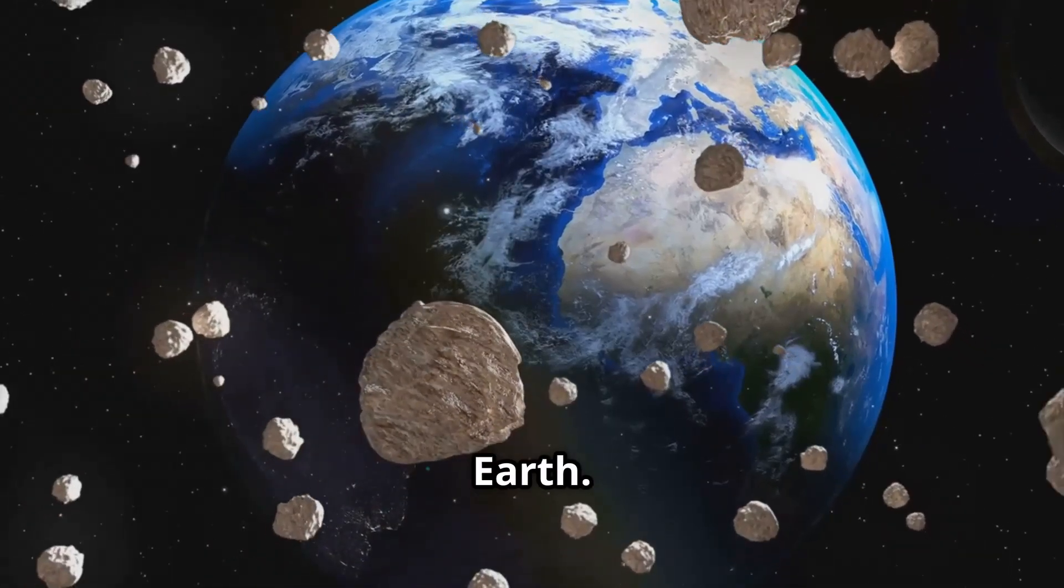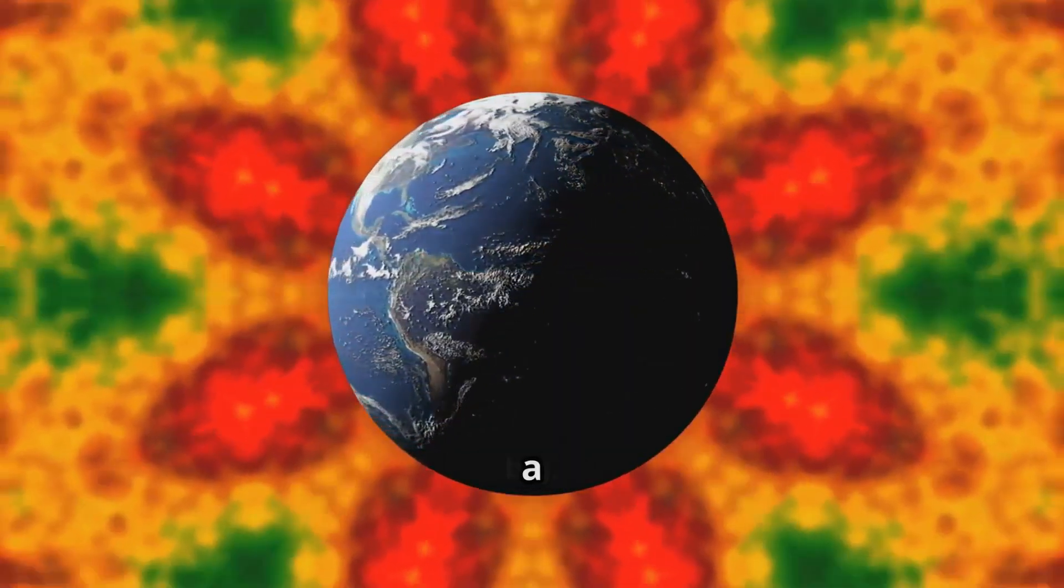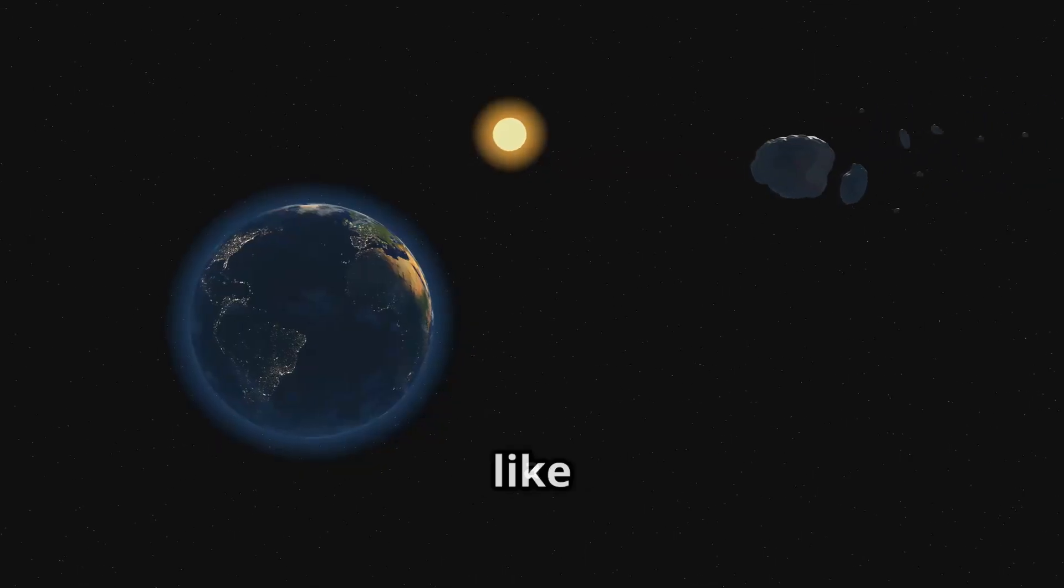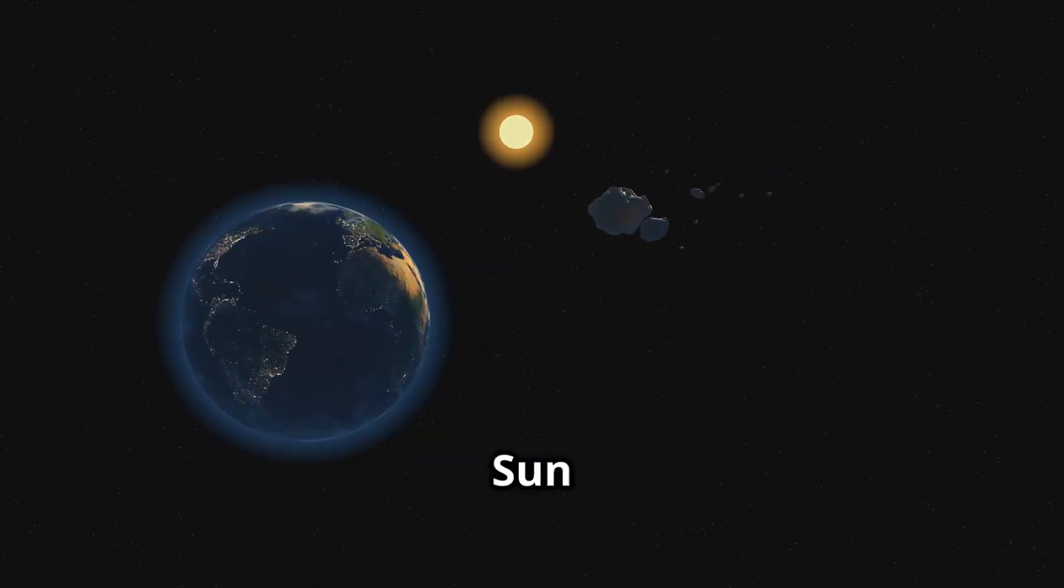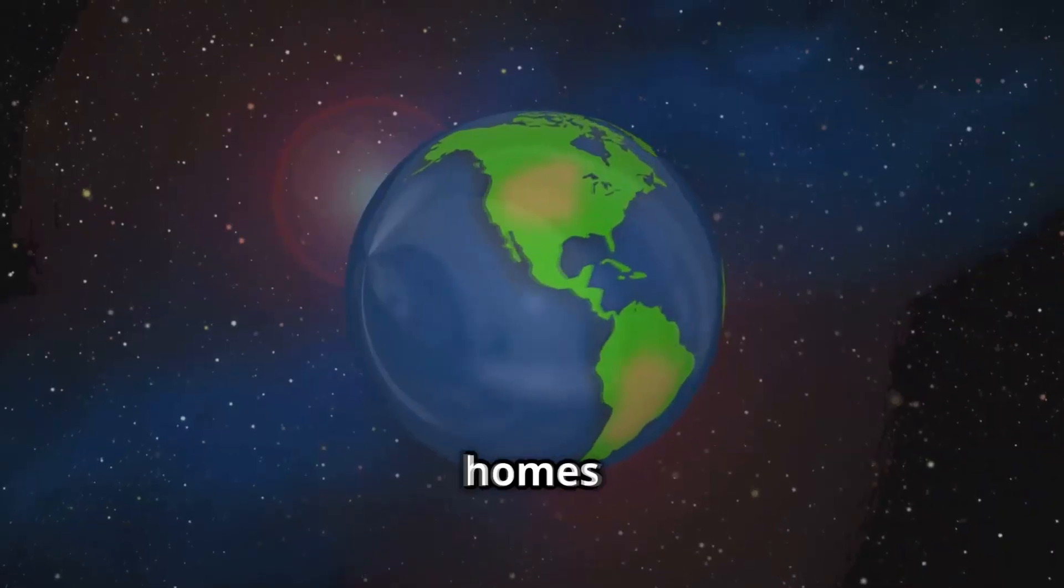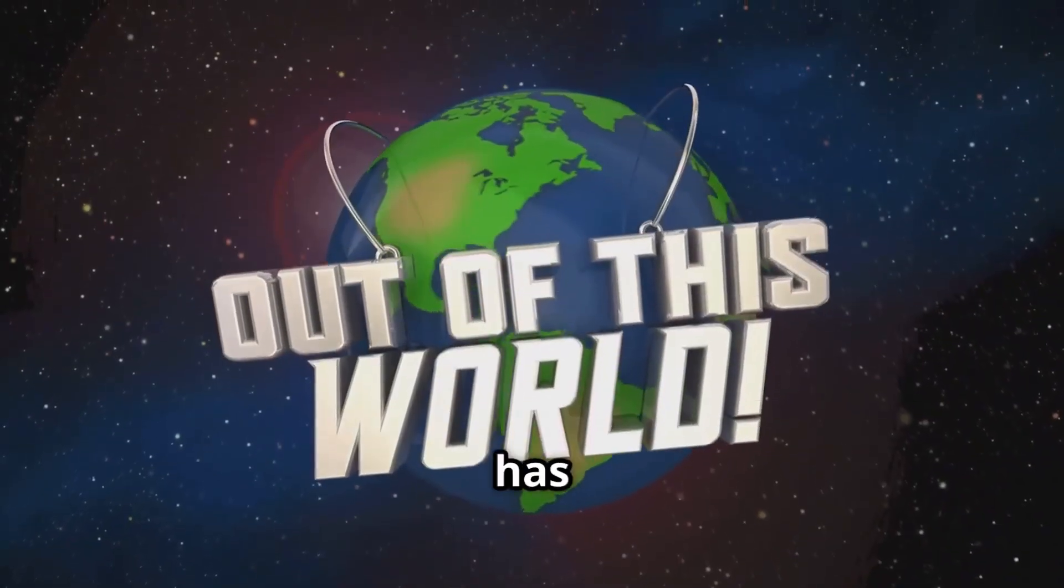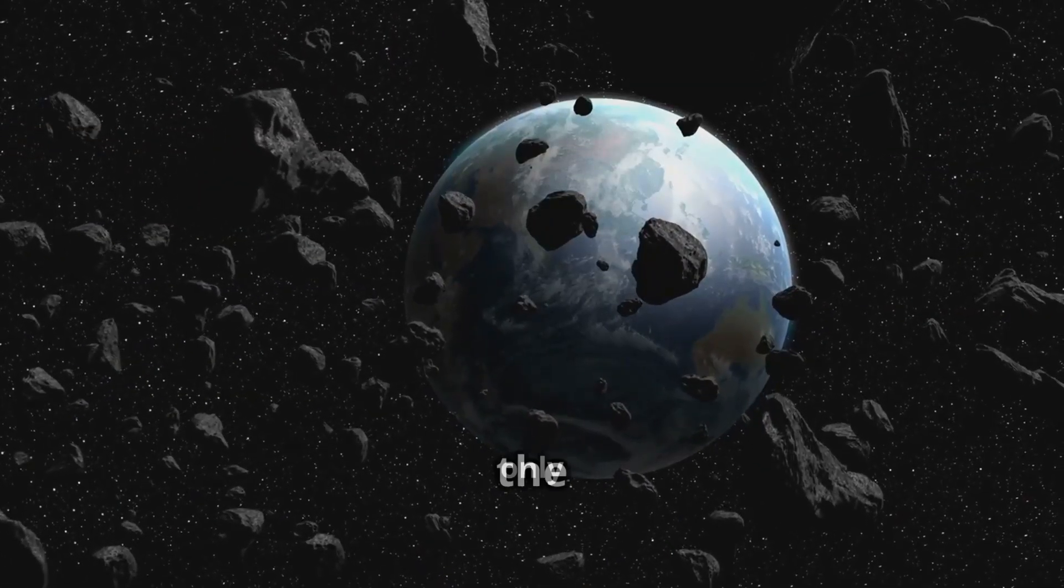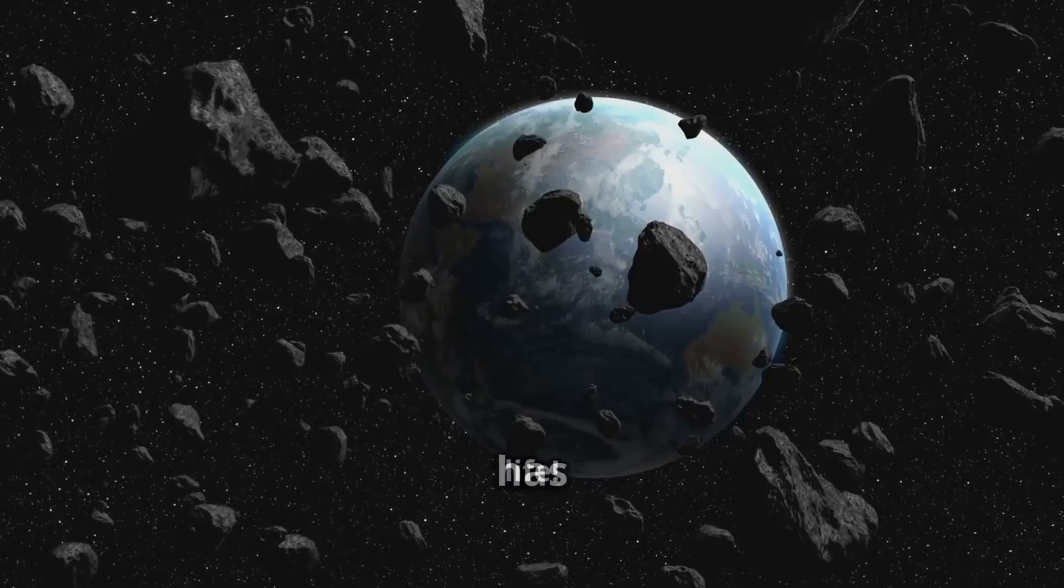Just like our Earth, Earth is our home and it's a part of a big exciting place called the solar system. The solar system is like a giant neighborhood in space with the Sun at its center. Just like our homes on Earth have addresses, Earth has a special place in the solar system. It's the third planet from the Sun and it's the only place we know of that has life.